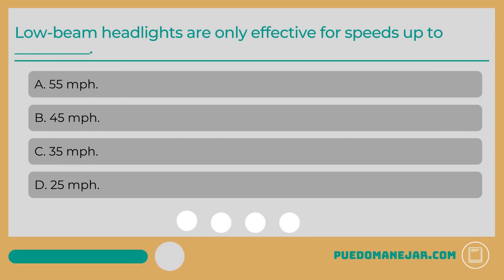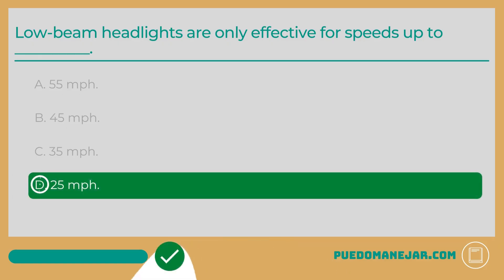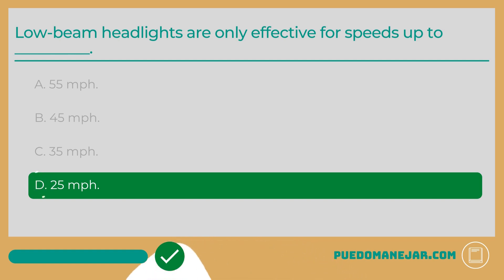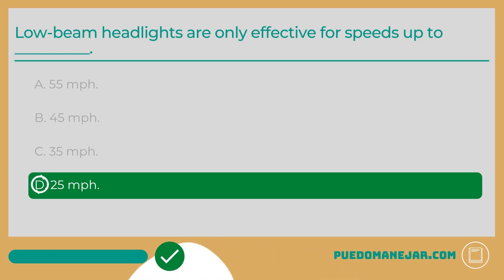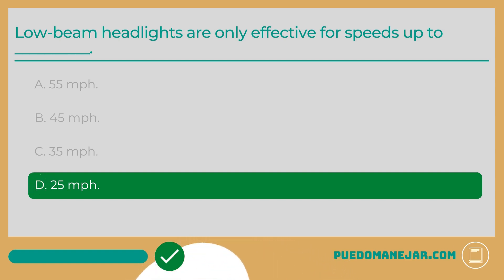Low beam headlights are only effective for speeds up to: A. 55 mph. B. 45 mph. C. 35 mph. D. 25 mph. The answer is D, 25 mph. Low beam headlights illuminate the road ahead for about 160 feet and are only effective for speeds of about 20 to 25 mph. If you are driving at night on a dark road, you may only be able to see and react to what is lit up by your headlights — this is what the phrase 'overdriving your headlights' means.